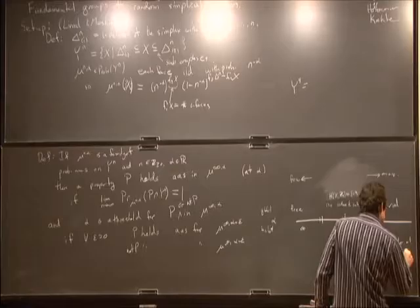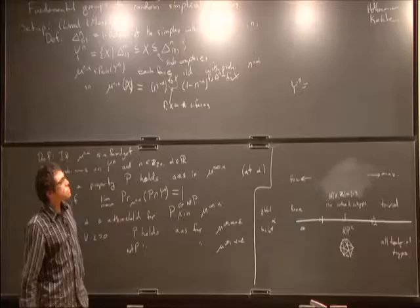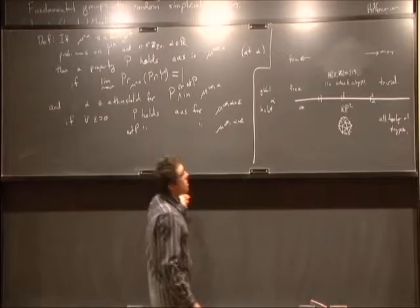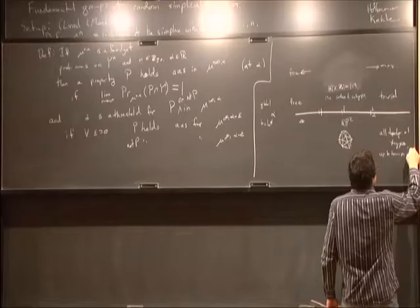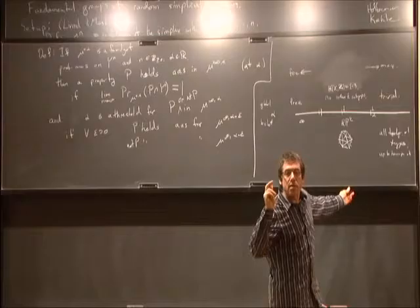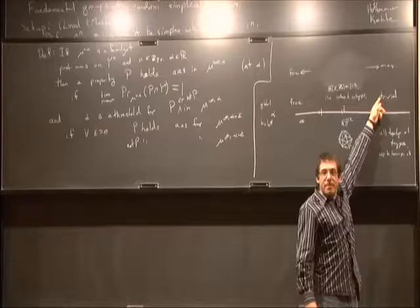Here we get all topological types — meaning up to homeomorphism, anything that could possibly be there as a simplicial complex. There's no reason for local subcomplexes to be simply connected; that's a global property. For example, a simplicial complex can have trivial fundamental group globally but contain a non-simply-connected subcomplex like a pentagon. Every two-dimensional simplicial complex type occurs as a subcomplex.